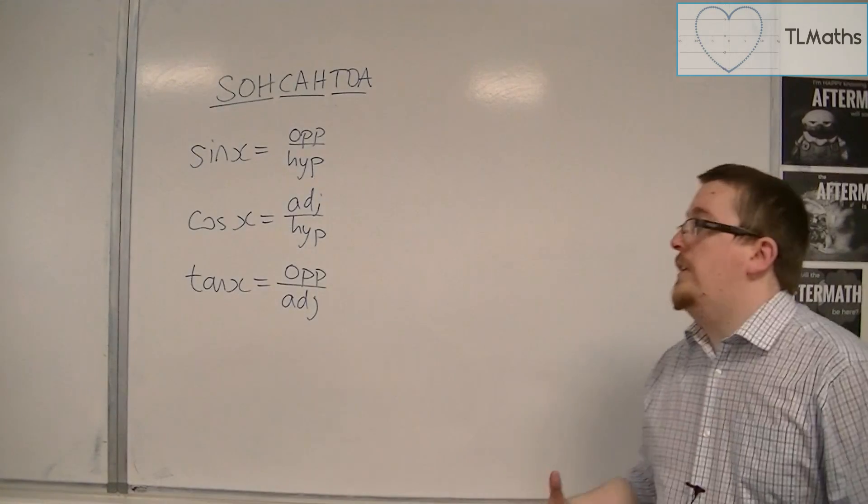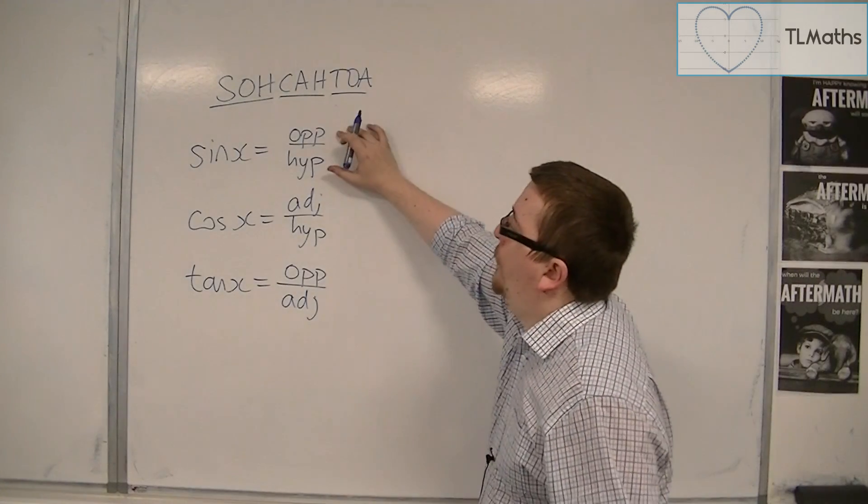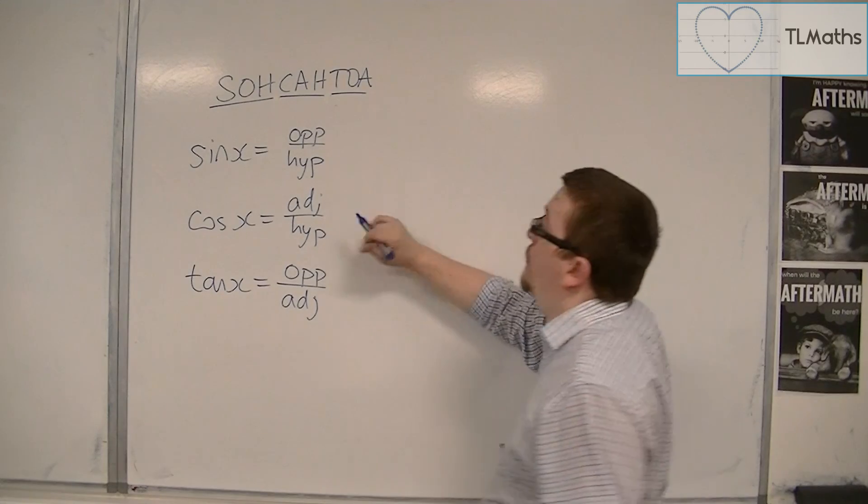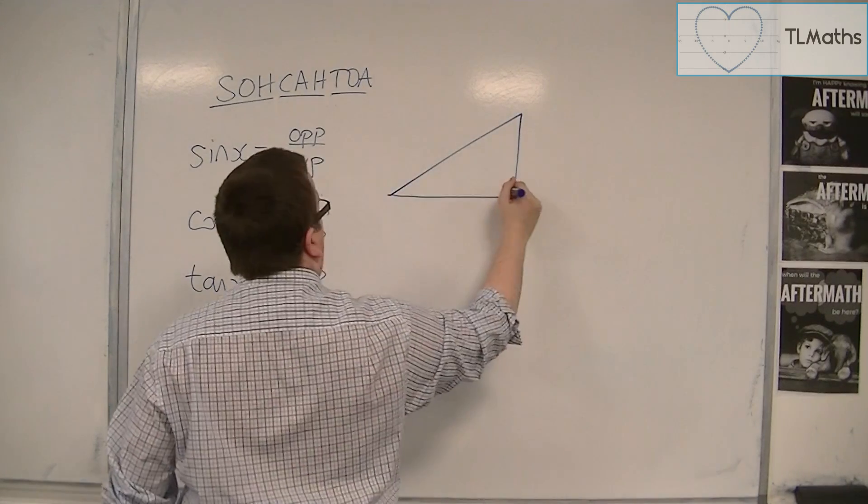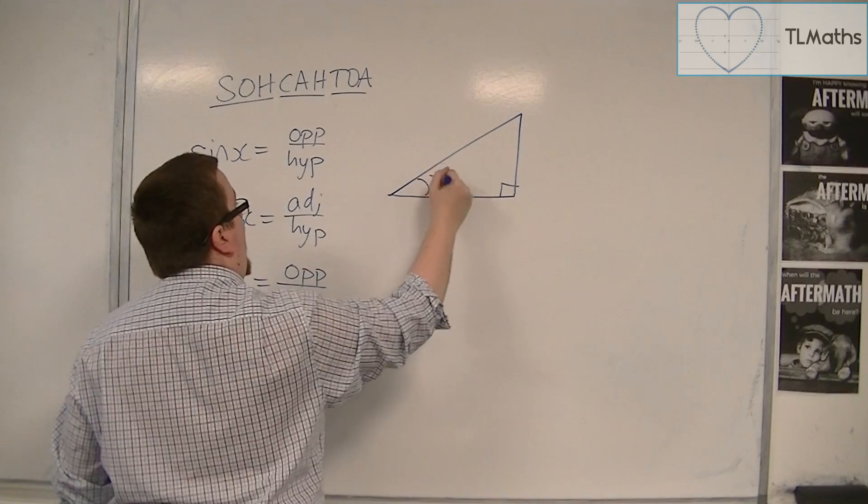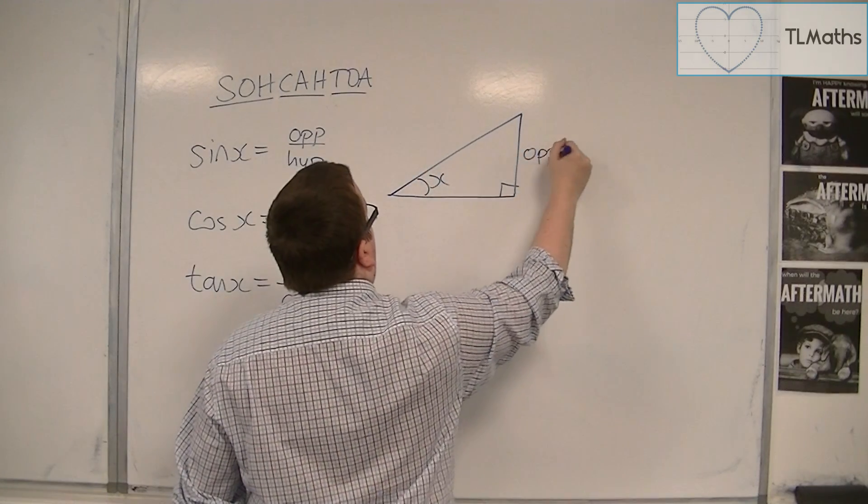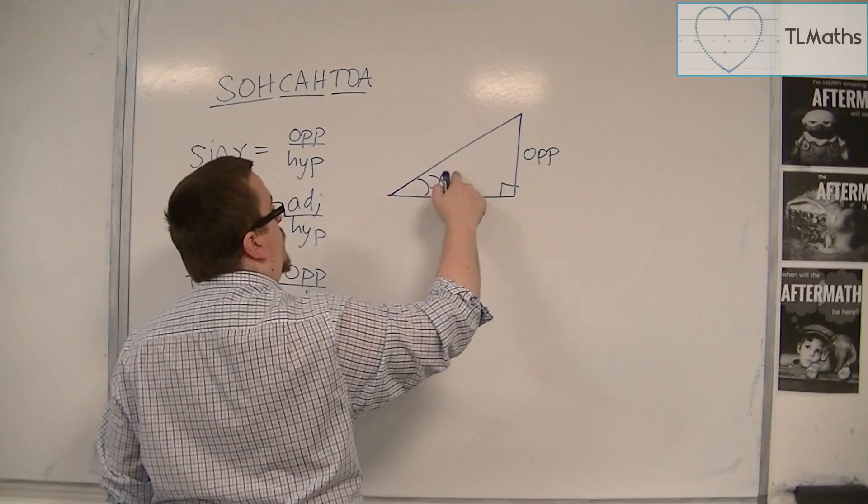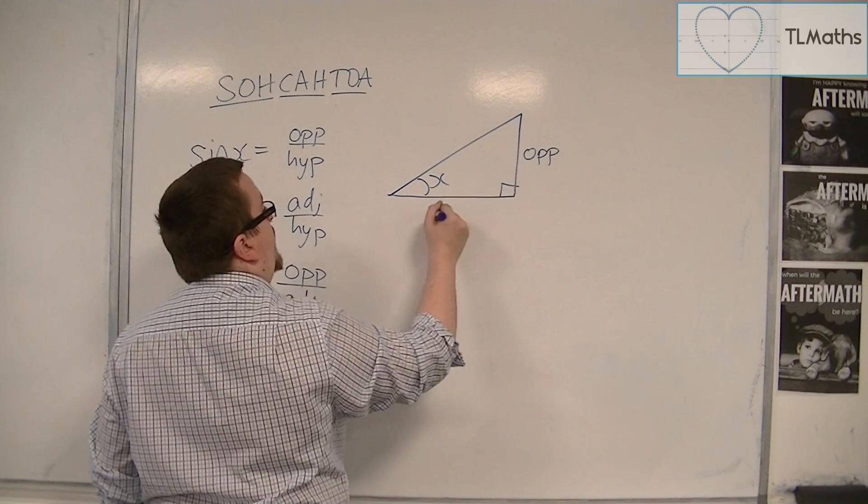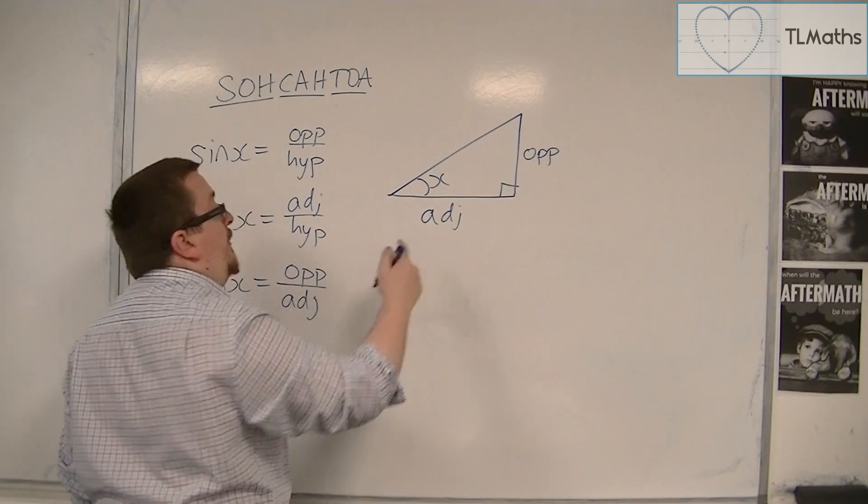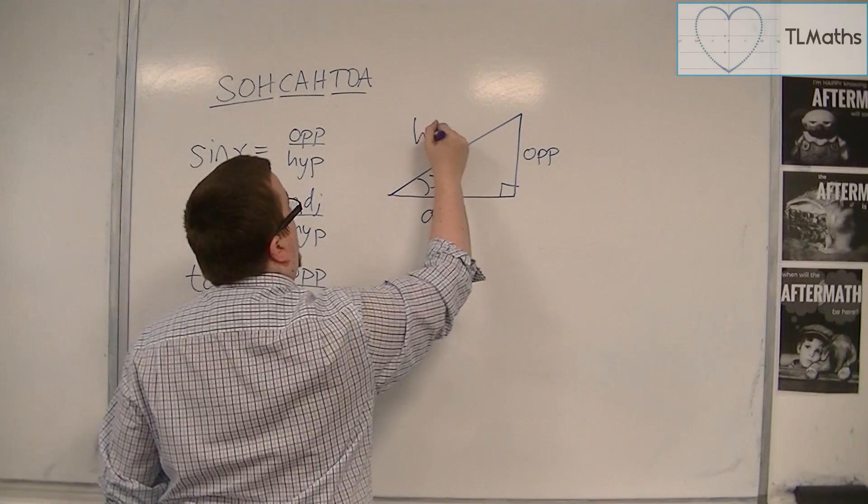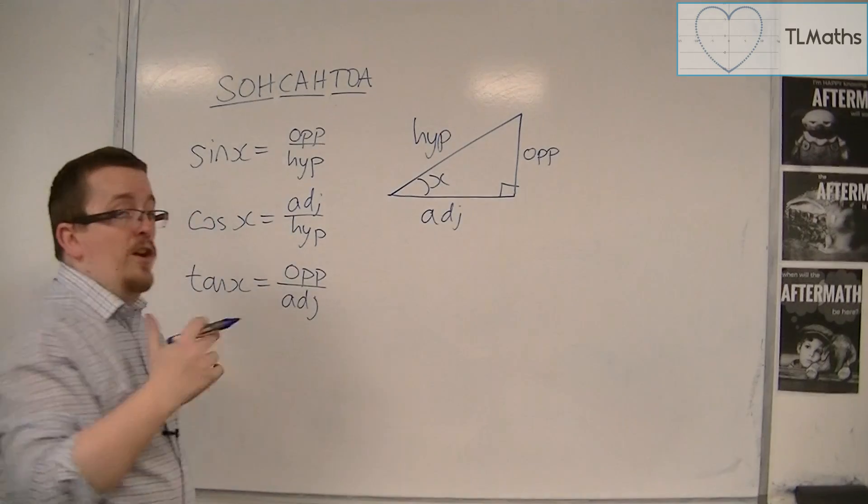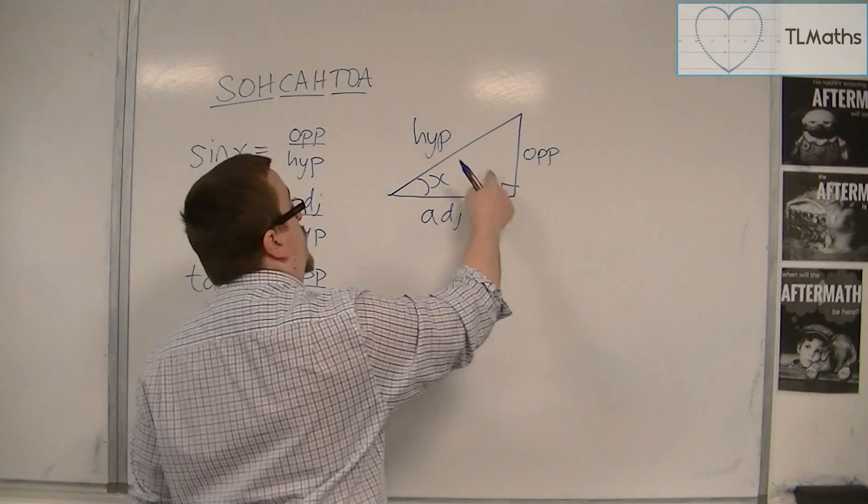Now what these sides, opposite, hypotenuse, adjacent, relate to are a right-angled triangle. So if that's x, then this is the opposite side to the angle. This is the adjacent side. Adjacent means next to, so it's the side that's next to the angle. And this is the hypotenuse, the longer side and the side that's opposite the right angle.